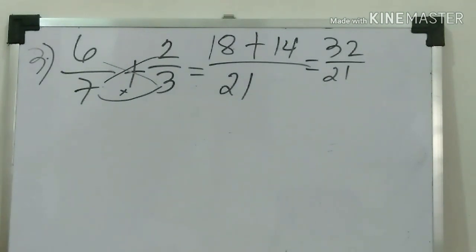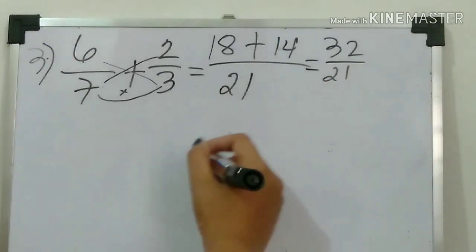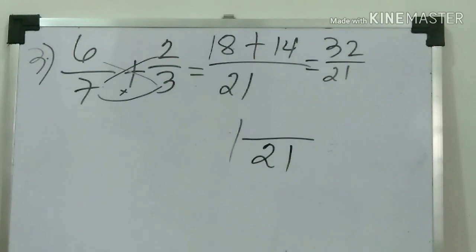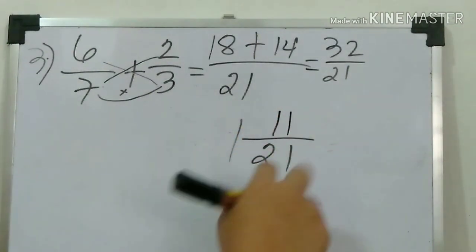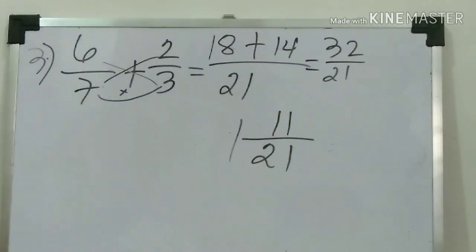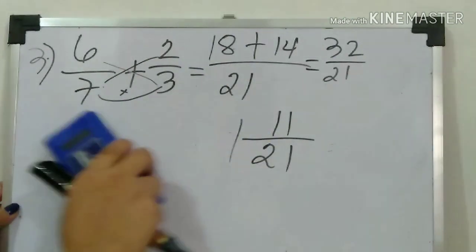So eighteen plus fourteen, what is the answer? The answer is thirty-two over twenty-one. That is an improper fraction. Therefore, change into mixed number. Divide: thirty-two divided by twenty-one, the answer is one with remainder eleven. Let's check: twenty-one times one equals twenty-one plus eleven equals thirty-two. Do we have the same answer? If the answer is the same, it means you learned the tricks I taught.